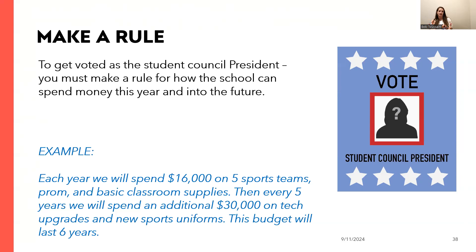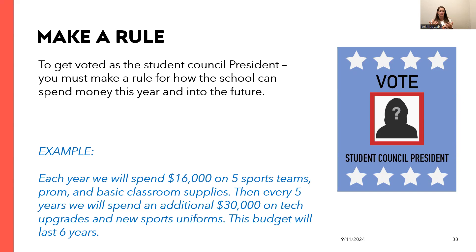Once they come up with their rule, they pitch it to the rest of the class — we write them on the board and they try to sell their classmates. Some groups see high value in sports, some in clubs, some show good balance. Then everyone votes old school: heads down, eyes closed, rules read out of order. They raise their hand for the one they like best. Surprisingly, they often don't vote for their own rule — other kids come up with creative ideas like charging for events, writing grants, or fundraising, and we let them be creative without suggesting anything.